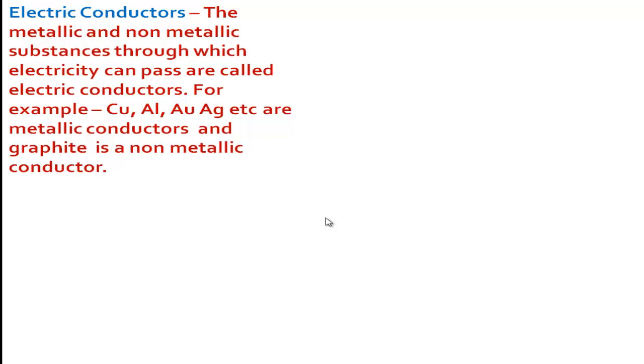Electric conductors: the metallic and non-metallic substances through which electricity can pass are called electric conductors. All metallic substances have electric conductivity, so all metals are metallic conductors. There is one exception — graphite, which is an allotropic form of carbon. Although it is a non-metal, it is also an electric conductor, making it a non-metallic electric conductor.